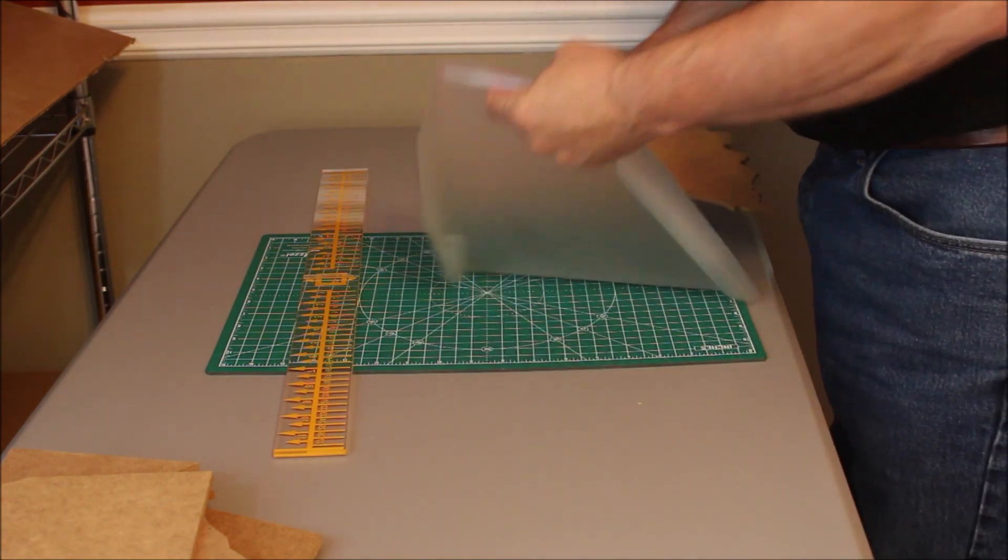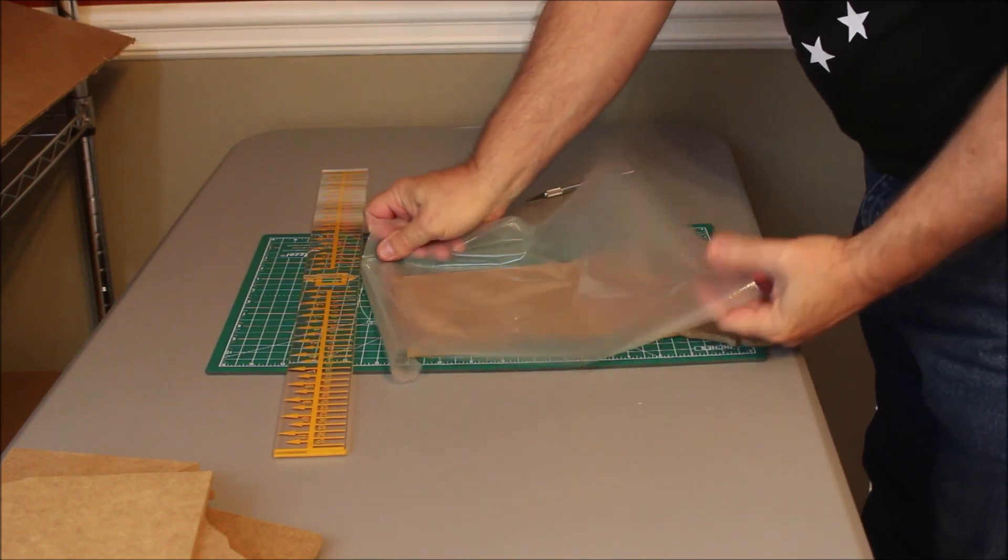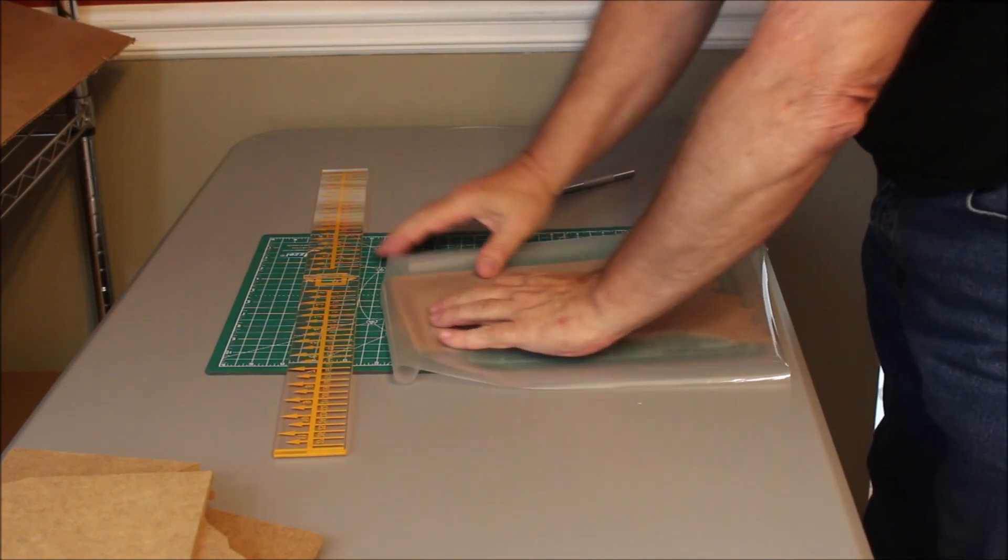Next, I'm going to set the laminate on top of the blank of Indiana, and get ready to go turn on the heat press and let it heat up.